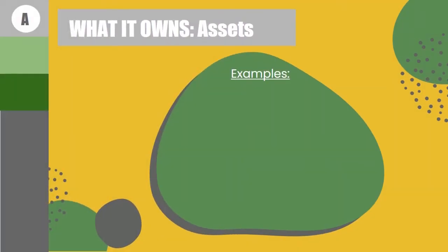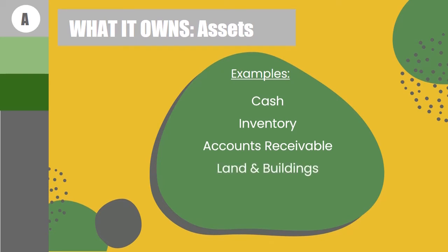The most common examples of assets: first is cash — yung pera na ginagamit ng business, itinuturing ding pinaka-fluid na asset. Then inventory — yung mga binabenta ng business, halimbawa sa merchandising. Accounts receivable — yung mga accounts na matatanggapan natin na hindi pa nasasettle ng ating mga customers, yung pagkakautang ng mga customers sa atin. Land and buildings — yung lupa na pinatatayuan ng building, main office, base of operation ng business. Vehicles used for delivery, and furnitures and equipment na ginagamit sa mga office ng business.